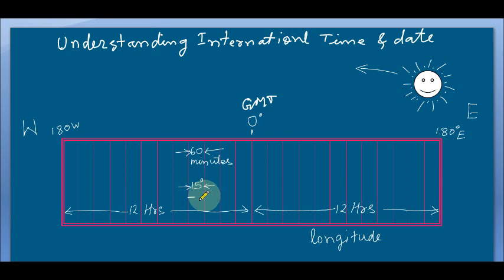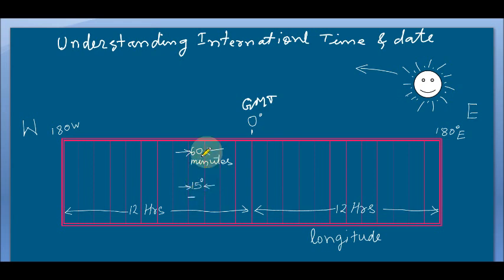These longitudes are drawn at an interval of 15 degrees. That means between one longitude and the next there are 15 degrees. As you know, one longitude to the next has a time difference of 4 minutes, so 15 degrees means a time difference of 60 minutes.